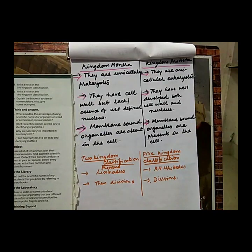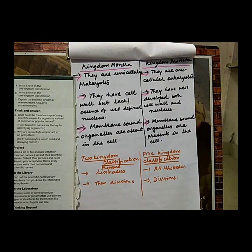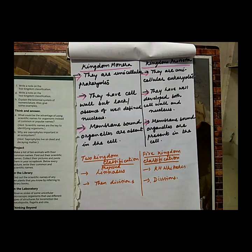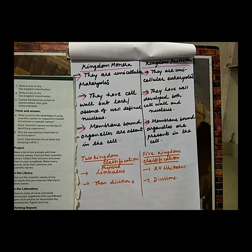True/False answers: A. Each class is further grouped into different orders — True. B. Kingdom is the smallest rank of taxonomy — False; it is the highest rank. C. Organisms of kingdom Plantae are heterotrophic — False; correct answer is kingdom Animalia. D. Kingdom Protista has unicellular organisms that lack a well-defined nucleus — False; correct answer is kingdom Monera. E. Homo sapiens is the scientific name of cat — False; it is the scientific name of humans. F. Plants that bear rose-like flowers are grouped under the family Rosaceae — True. G. The group of animals that give birth to young ones is grouped under Mammalia — True.